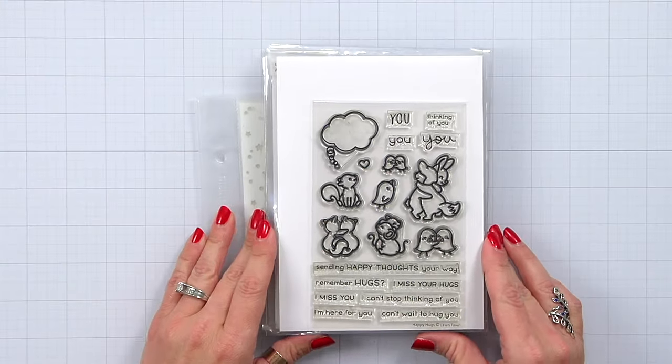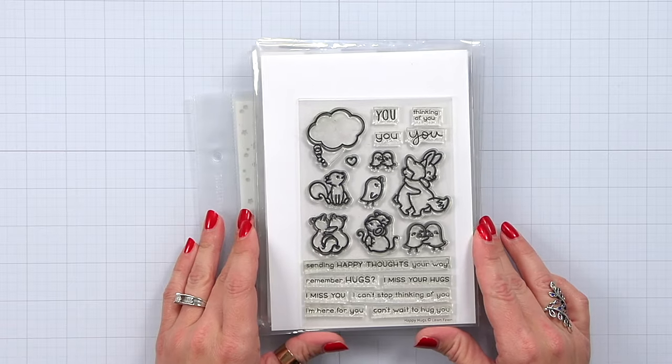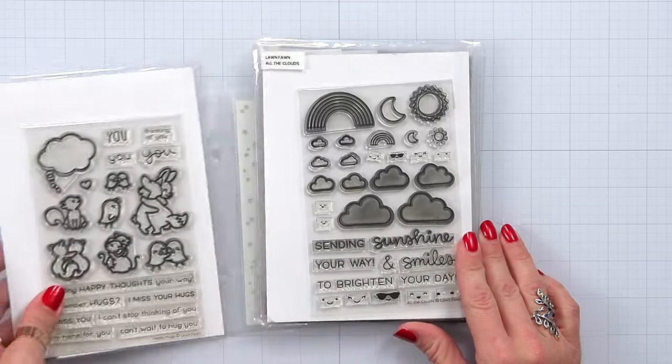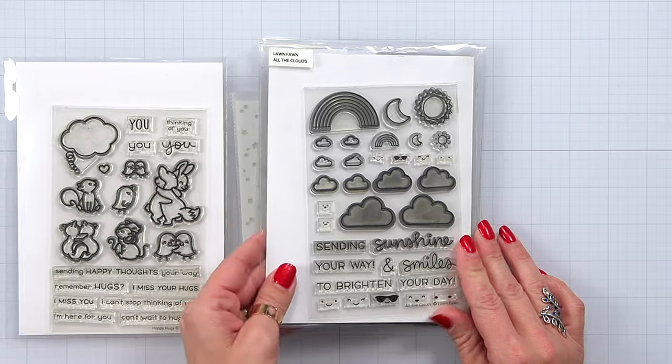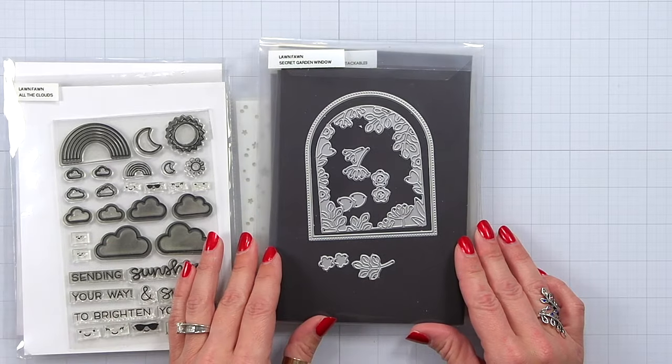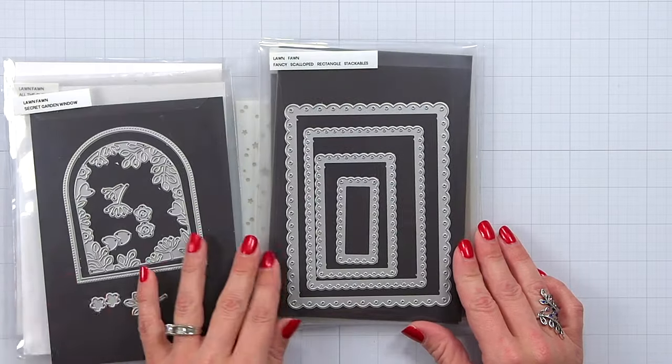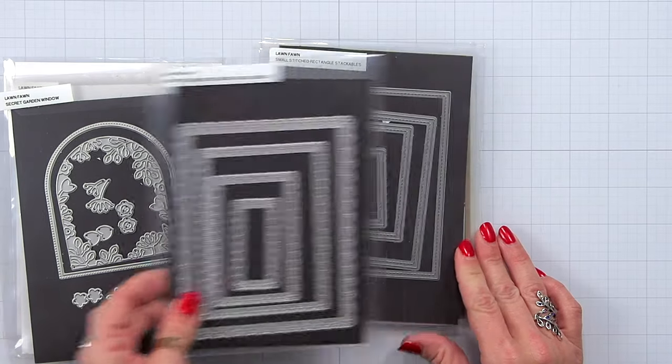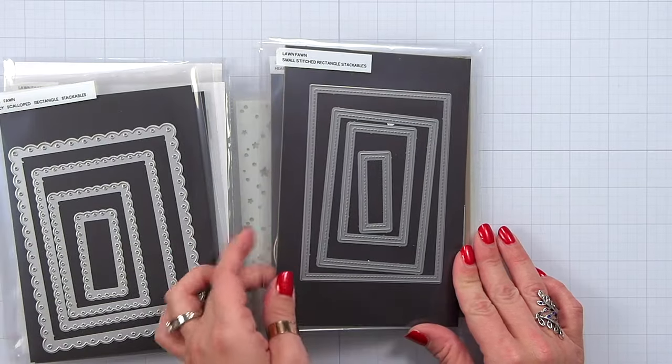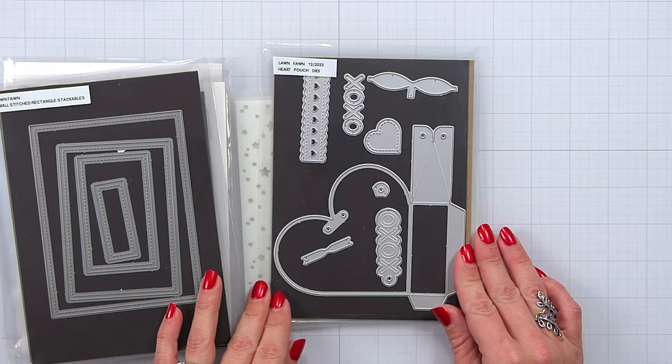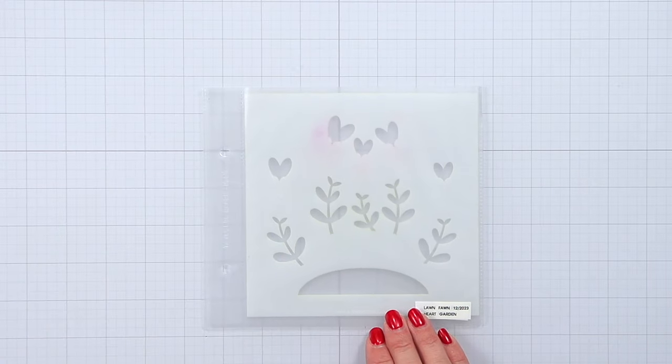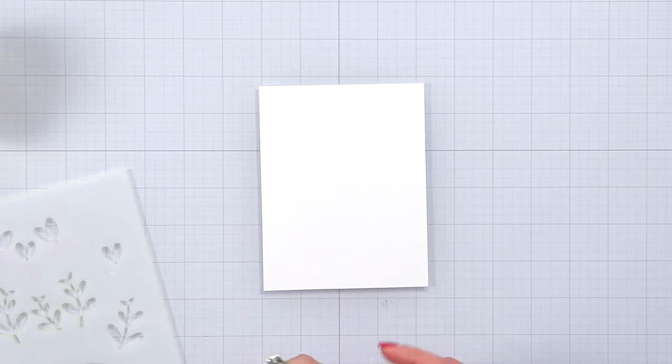Here's a look at some of the supplies that I pulled in to use for the card. I plan on using an image from the Happy Hugs stamp set, some clouds from All the Clouds, the Secret Garden Window and the Fancy Scalloped Rectangles Stackables and the Small Stitched Rectangle Stackables. I have the Heart Pouch and the Heart Garden Stencil.